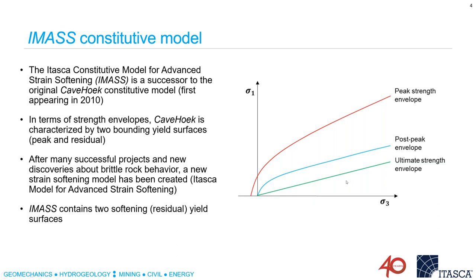The residual strength of CaveHoek was typically set to represent bulk rock fill material with angular fragments — giving zero cohesion and a friction angle of around 40 to 45 degrees. Because of the powerful features and ability of CaveHoek to closely mimic the behavior of rock mass under complex stress paths, over time CaveHoek became the default constitutive model for mining applications at Itasca. After many successful projects and new discoveries about rock behavior, IMAS was developed based on all the learnings from CaveHoek.